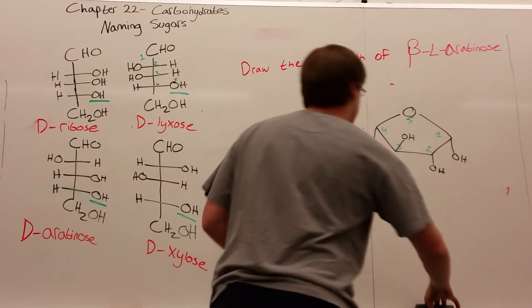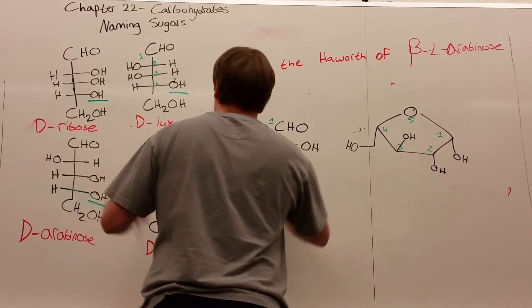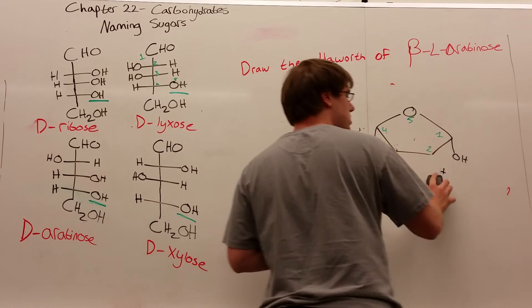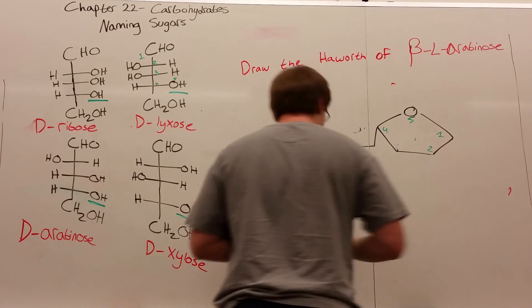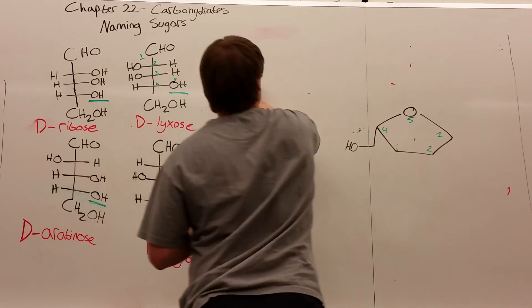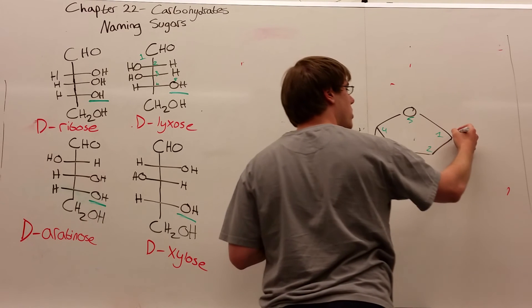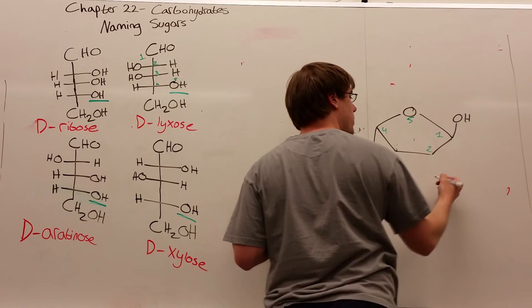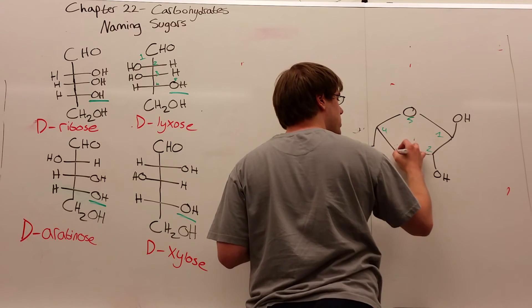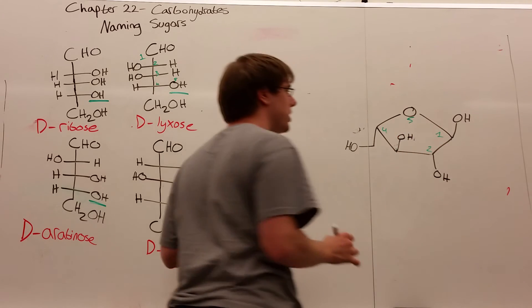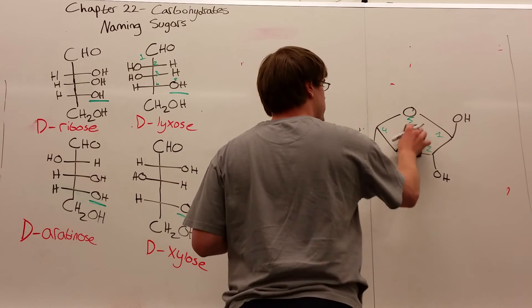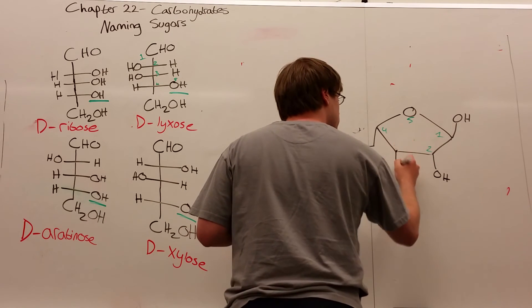Let's try one more, but go from the Haworth to the name. I'm going to erase these OHs and say I don't know the name—let's name this. I'll draw an OH pointing up on carbon 1, an OH pointing down on carbon 2, an OH pointing up on carbon 3, and make this point down as well.